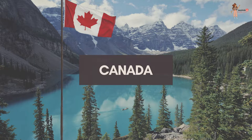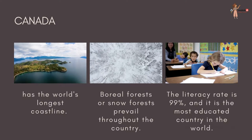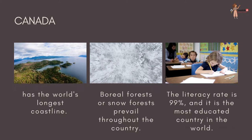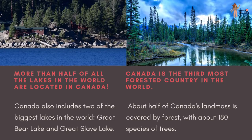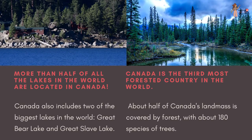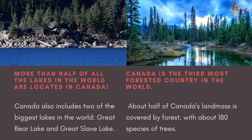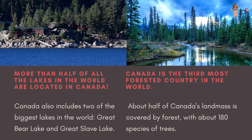Canada is a country as diverse in culture as it is in immense size. Multiculturalism is a cherished attribute of Canada and is reflective in the many distinctive communities across the country. Canada has the world's longest coastline. Boreal forests or snow forests prevail throughout the country. The literacy rate is 99% and it is known as the most educated country in the world. More than half of all the lakes in the world are located in Canada, and it also includes two of the biggest lakes in the world: Great Bear Lake and Great Slave Lake. Canada is the third most forested country in the world, with about 180 species of trees.